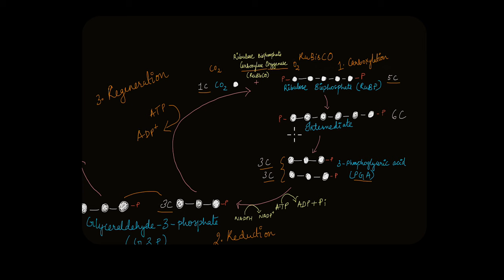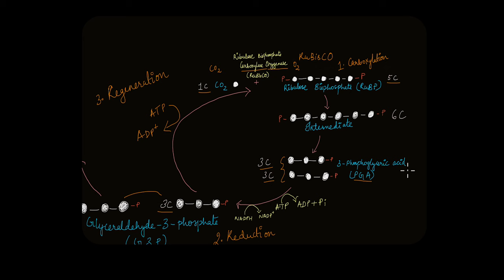However, this reaction as described is not balanced. The 3-carbon G3P needs to regenerate a 5-carbon RuBP, which doesn't add up with just one CO2 entering. So let's focus on balancing the Calvin cycle reaction.